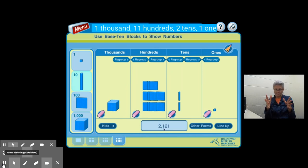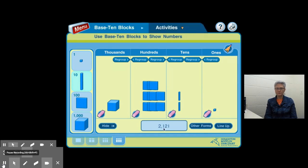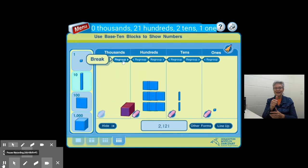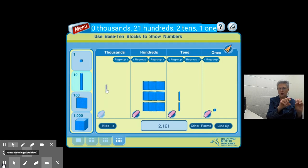So this is a second way to represent 2,121. We could also represent it in another way and regroup this thousand into 10 hundreds as well. So now we don't have any large cubes for the thousands place, but that's because I regrouped both of them into the hundreds.